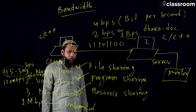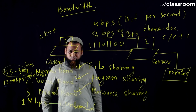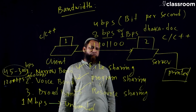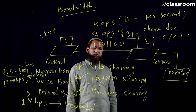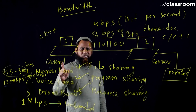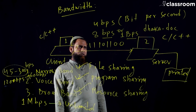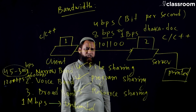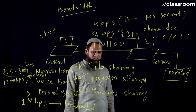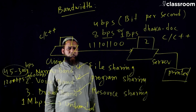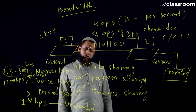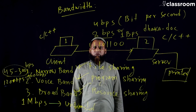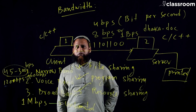Voiceband is used for telephone and covers computer-to-printer data transfer. Broadband uses fiber optic cable and supports file sharing, program sharing, and resource sharing at high speeds. File sharing involves a client downloading or reading a file from a server. Program sharing means sharing programs like C or C++. Resource sharing covers printers, memory, hardware, and optical disks. That is all for today — see you in the next class. Thank you very much.